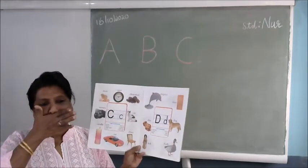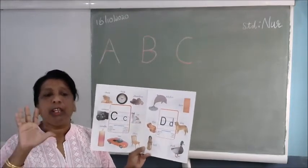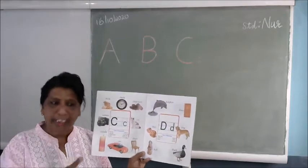So you must know all the letters till Q. What is A for, at least five pictures you must say with each letter.